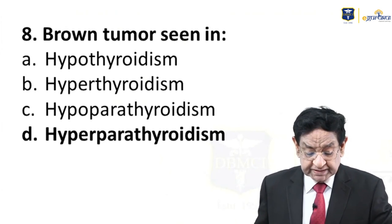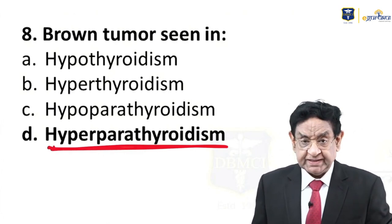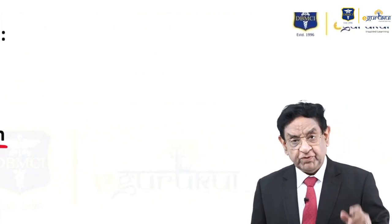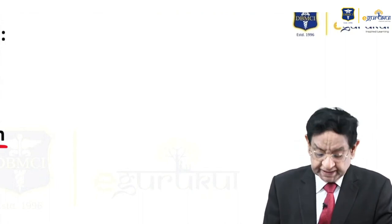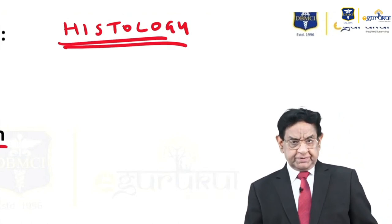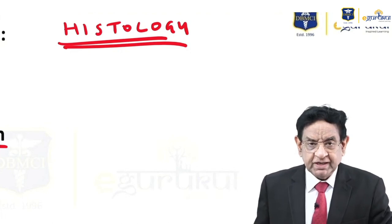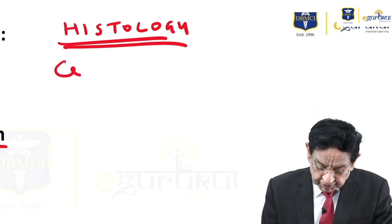Question 8: Brown tumor is seen in hyperparathyroidism. To understand this, you need to know the basic histology of bone. Before discussing the radiology question about brown tumor, let's talk about the histological examination of cortical bone.